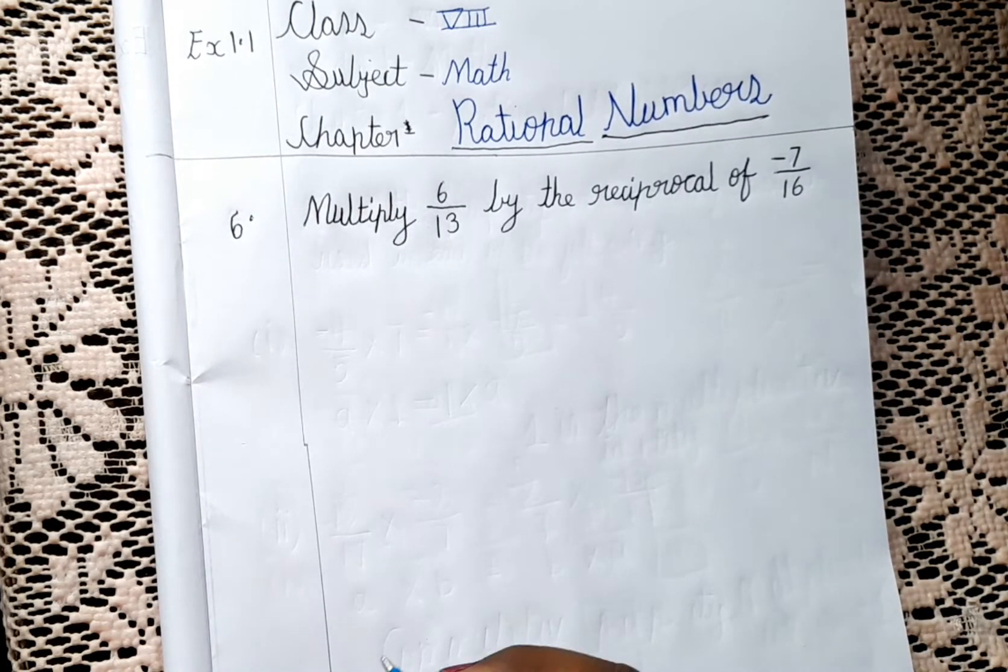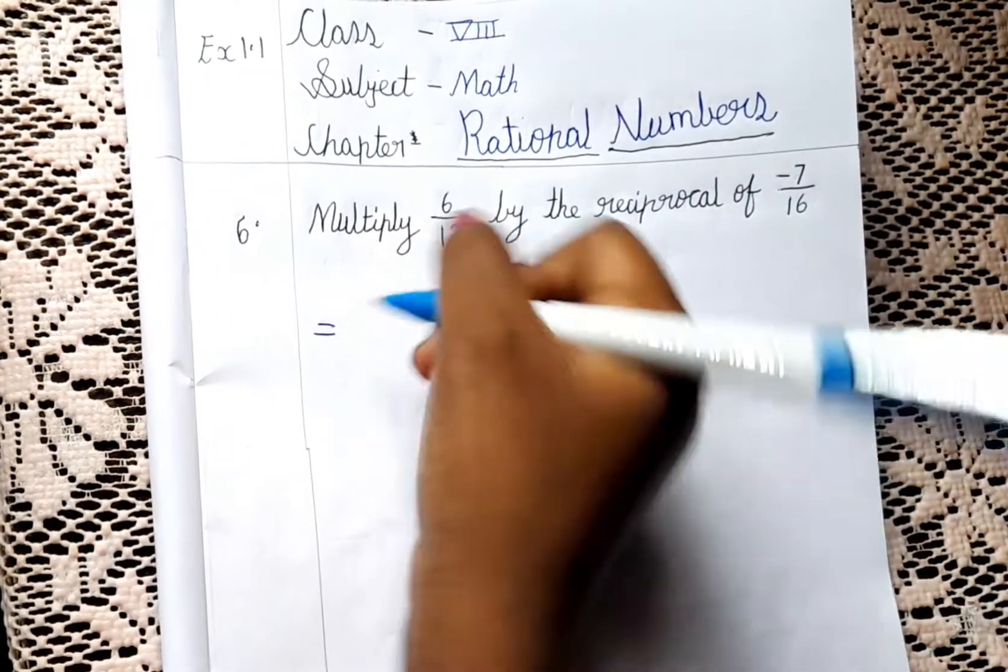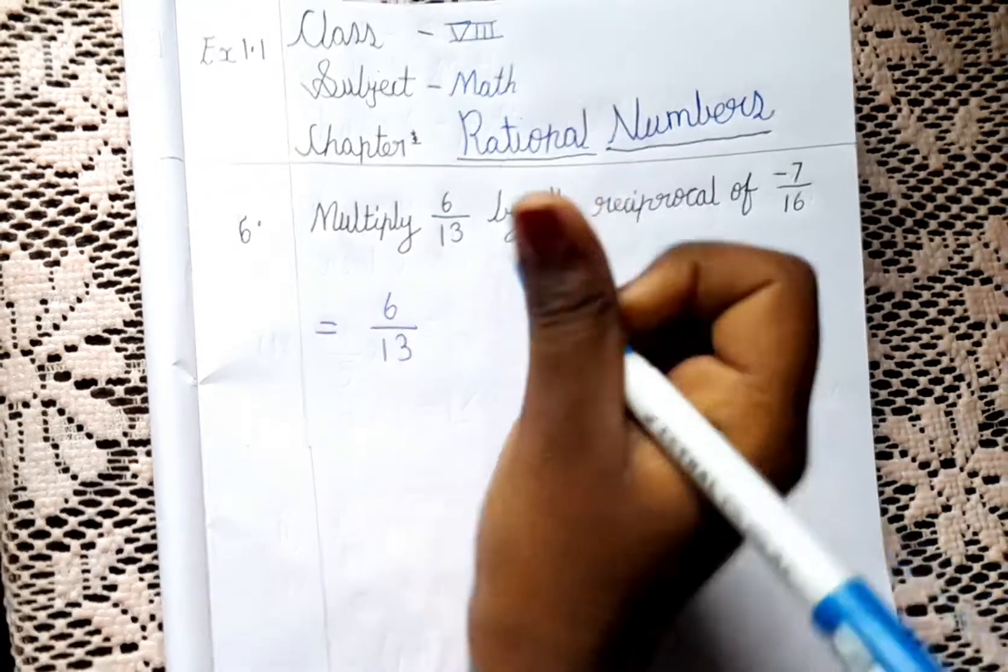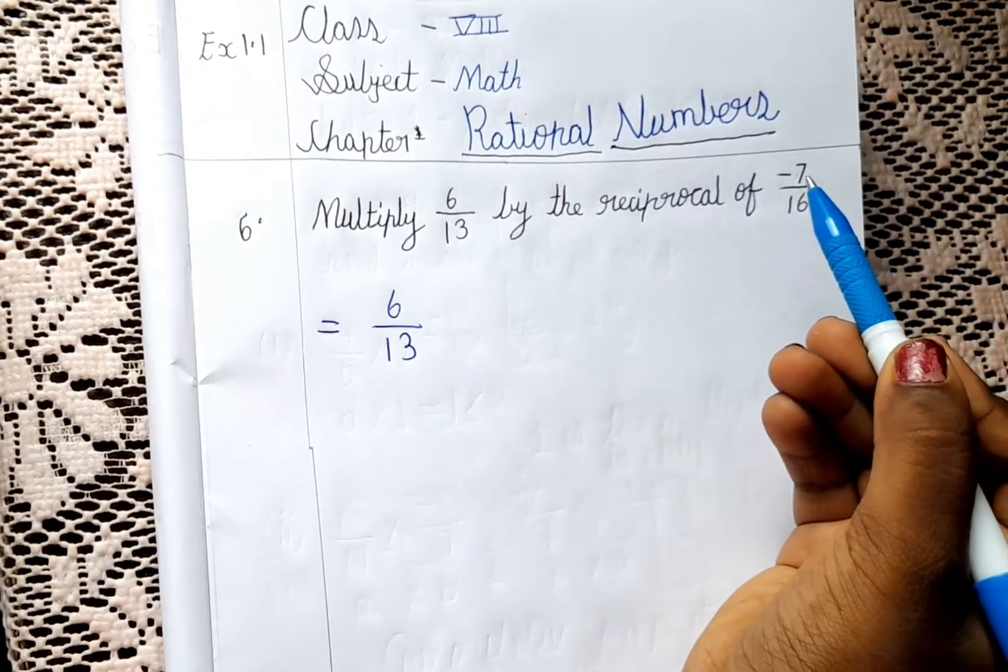So our first step is gonna be, let's write the same number 6 by 13. And now let's write the reciprocal of minus 7 by 16.